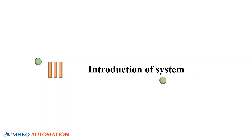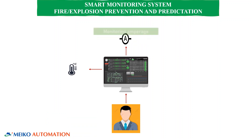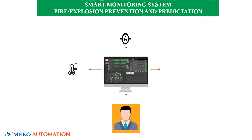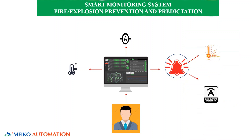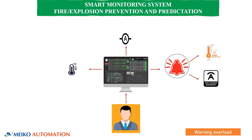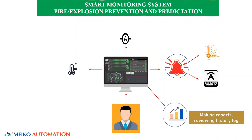Introduction of the system. The Smart Monitoring System for Fire Explosion Prevention and Prediction features monitoring of temperature and amperage, warnings for high temperature and overload, as well as making reports and reviewing history logs.